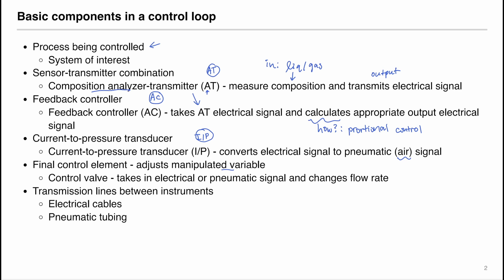Commonly, the final control element could be a control valve. The control valve takes in an electrical or pneumatic signal and changes the flow rate. We also have transmission lines that connect between each instrument. The transmitter sends a signal along a line to the controller AC, which takes in an electrical signal and outputs an electrical signal to the I/P transducer, where it becomes an air signal, and finally feeds into the control valve to control the flow rate.